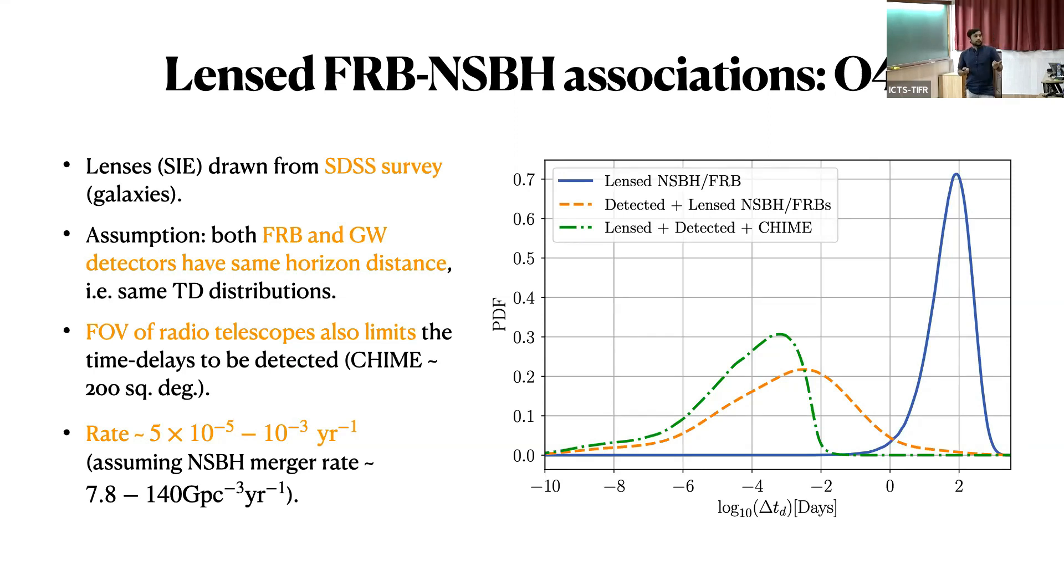We consider the rate of association for such scenarios to happen. If you consider this observing scenario, we find that the rate is one in 1000 years. Considering the span of upcoming run to be two years, there's only 0.2% chance that you will see such an association. So not very good.